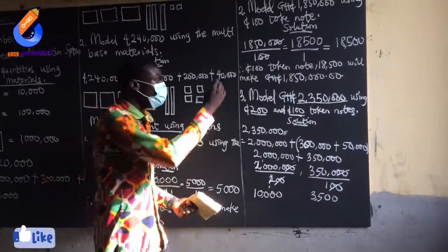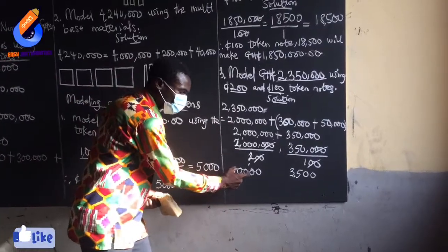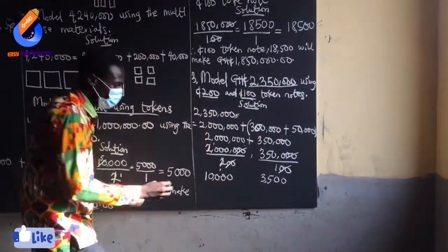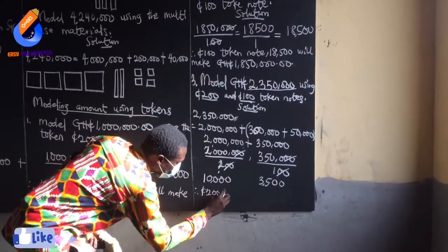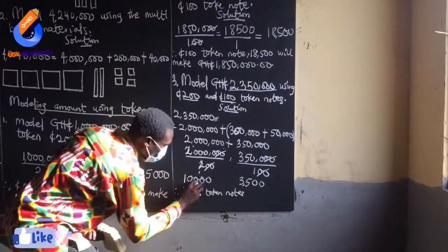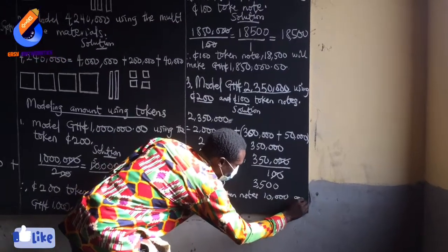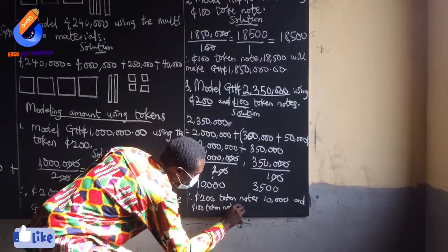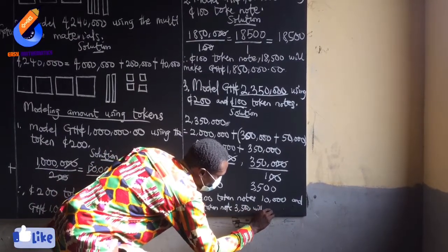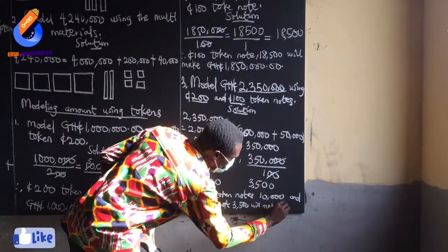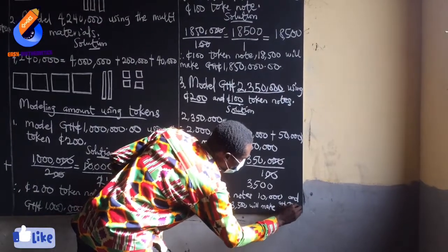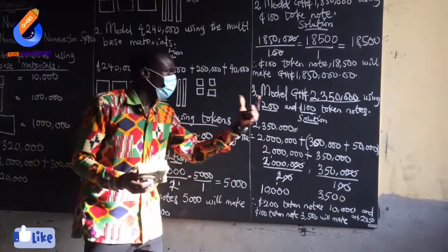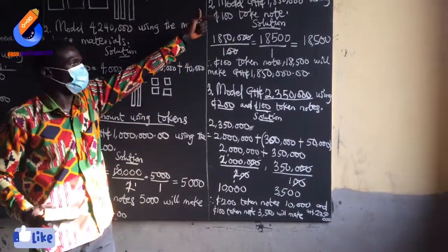That means, using 200 and 100 cedi notes: 10,000 of the 200-cedi notes and 3,500 of the 100-cedi notes will make this amount. Therefore, 200-cedi token notes of 10,000 and 100-cedi token notes of 3,500 will make the amount of 2,350,000 Ghana cedis. This is how you model an amount with two tokens, and with one token.